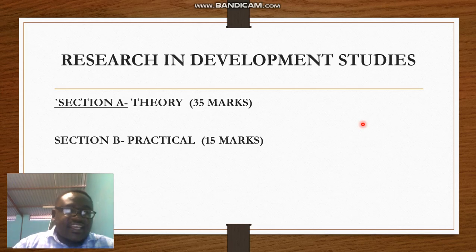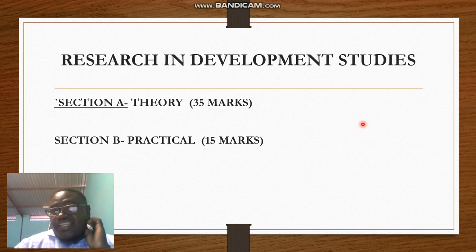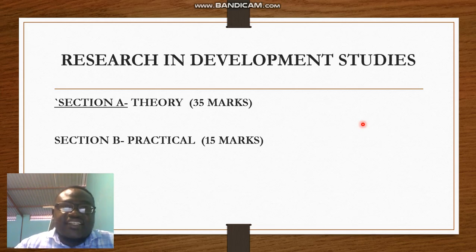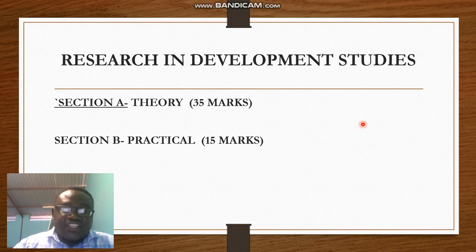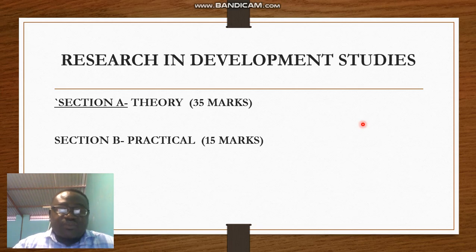The first section is Section A, and Section A is predominantly theory. They ask theoretical questions about research — for example, what are the methods used to collect data, what are the sampling methods, and what are the weaknesses and strengths. That is what we call theory. In total, Section A has 35 marks. If learners have a good understanding of theory questions, they will not have a problem in research.